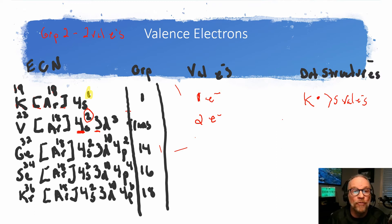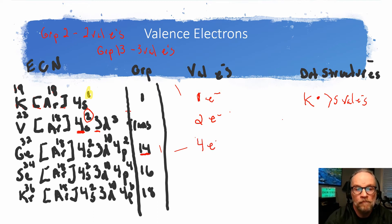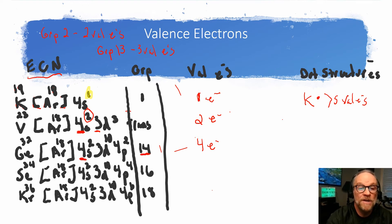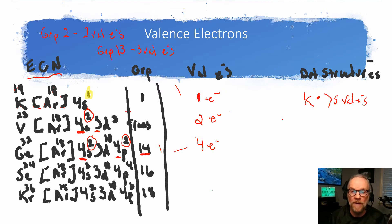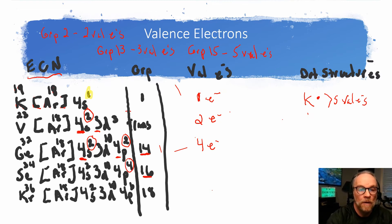Elements in group 13 have three valence electrons, and elements in group 14 have four valence electrons. If you examine the electron configuration notation, you have two subshells — the s and the p — and you add those up to get four valence electrons. Group 15 elements have five valence electrons. In group 16, four plus two makes six, so those elements have six valence electrons.